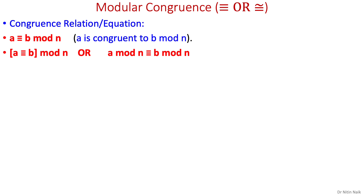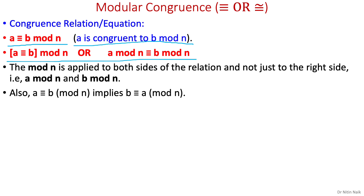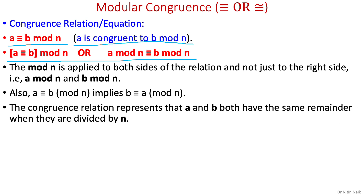Let's look at how we write and read this modular congruence relation. This is the standard way of writing and we read it as 'a is congruent to b mod n.' For our understanding, the mod n is applied to both sides of the relation — meaning a mod n and b mod n — and not just to the right side. Also, a is congruent to b mod n implies b is congruent to a mod n. The congruence relation represents that a and b both have the same remainder when they are divided by n.